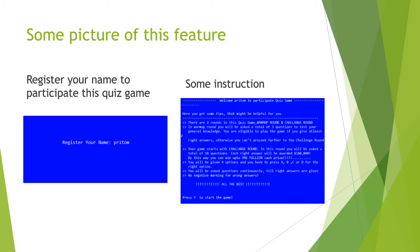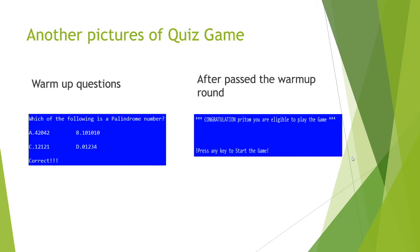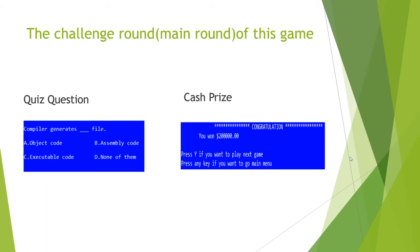Here we can see some pictures of the features — registering your name and some instructions. Another picture shows the quiz game, and this is the warm-up questions screen. This is the screen after passing the warm-up round. This is the main play round or challenge round. These are the quiz questions in the main playground, and this is the cashier prize screen where you can see you have won two lakh dollars.